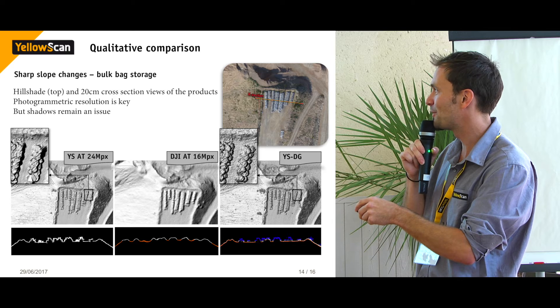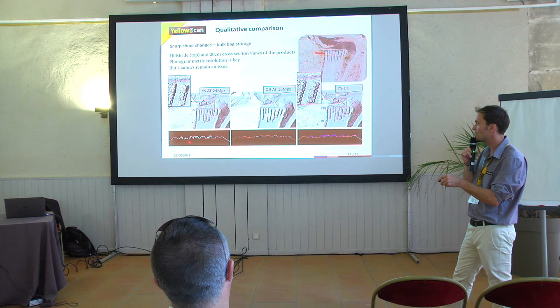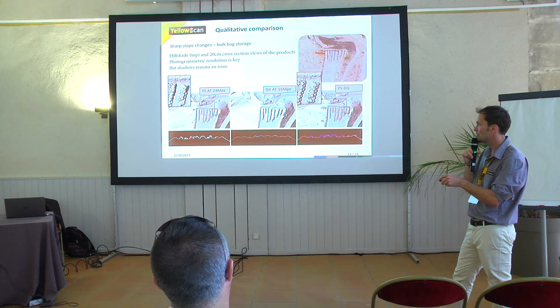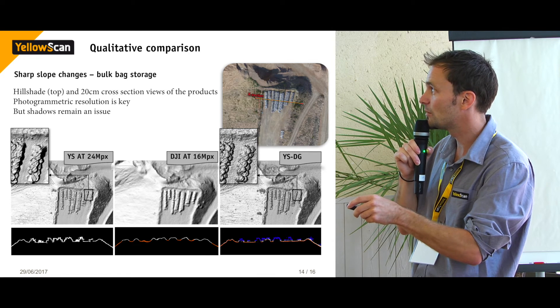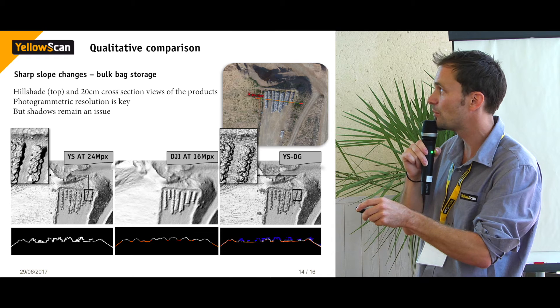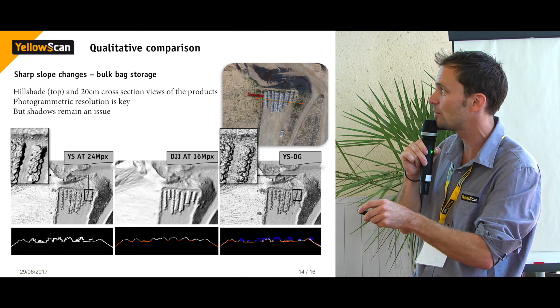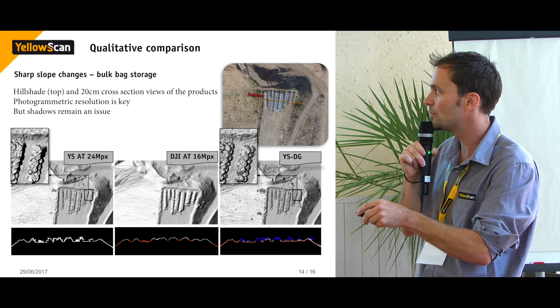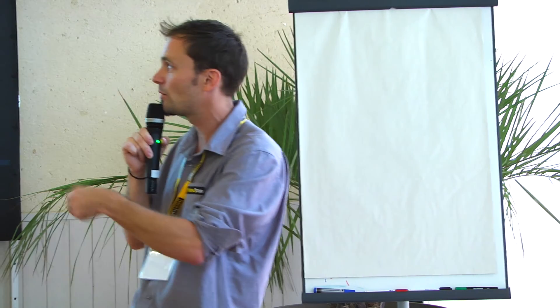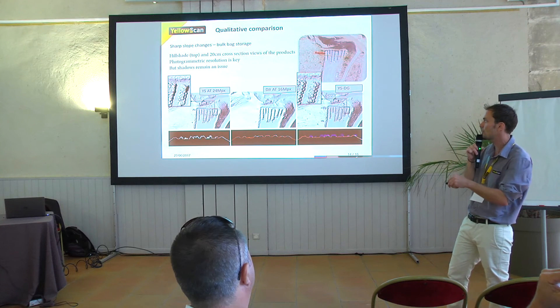With the higher resolution camera, you get good detail on shape, but you can be influenced by light conditions. For example, bulk bags stored on the platform create shadows on certain sides, resulting in no data on those faces. The same shadow effect occurs on mine benches, which is just one example of photogrammetry's light dependency.